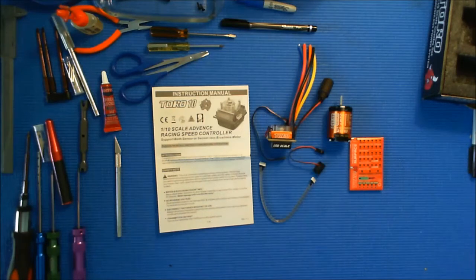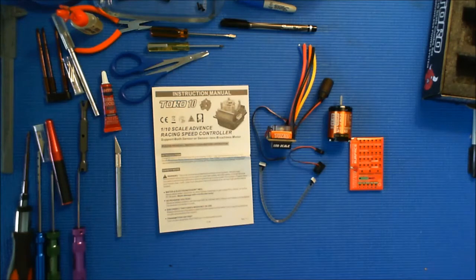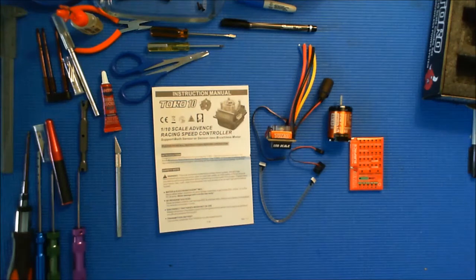It is a sensored 7.2 volt, 17.5 turn, max current 75 amp. KV rating is 1870, 2 pole. The battery range is limited to 2 cell, as I mentioned earlier.